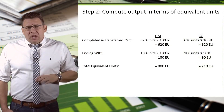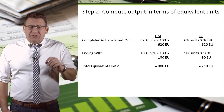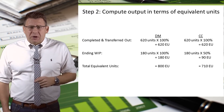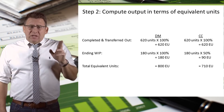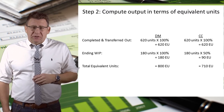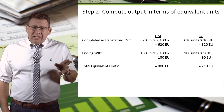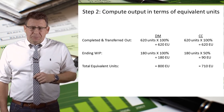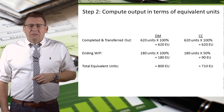Here's the math. Completed and transferred out, we had 620 units, which are 100% complete for direct materials and 100% complete for conversion costs. If they've been completed and transferred from this process, they are done with material, labor, and overhead from this process. Ending WIP has 180 units, which are 100% complete for direct materials — meaning we're not adding any more direct materials to this process — and 50% complete for conversion costs. Thus, the equivalent units for direct materials is 180, but the equivalent units of conversion costs is only 90 units. The total equivalent units is 800 for direct materials and 710 for conversion costs.